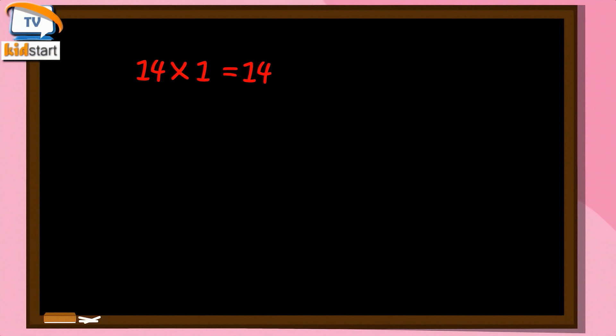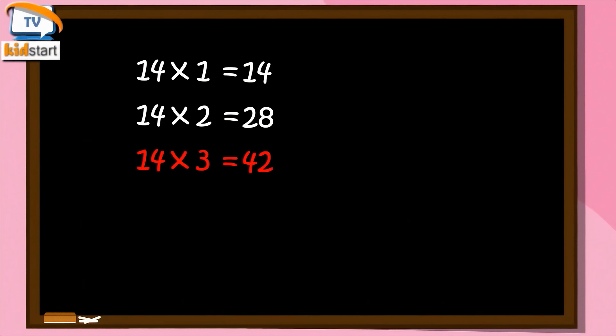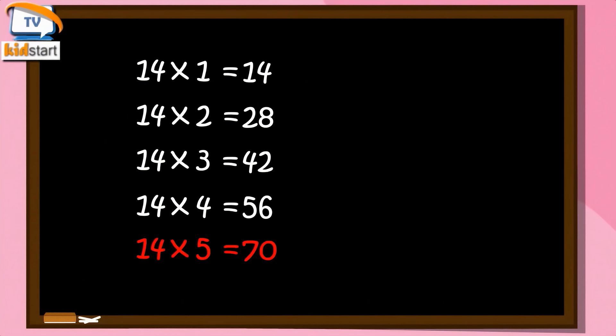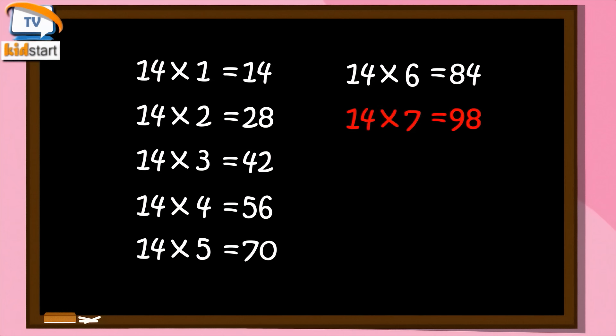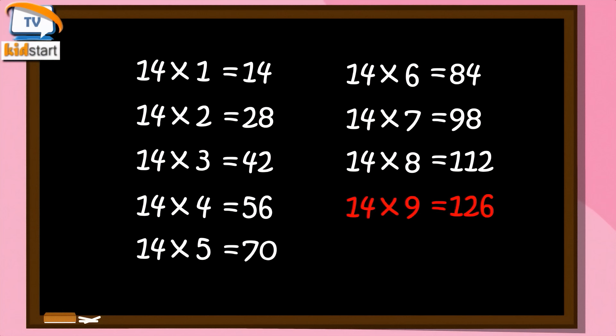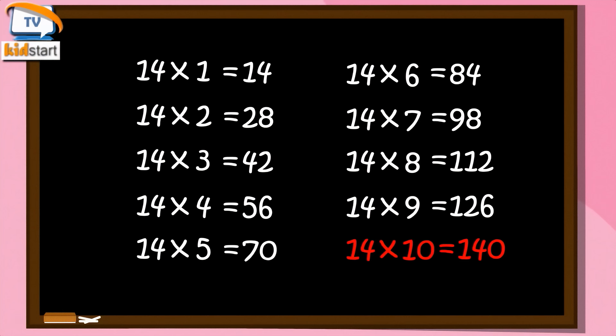Fourteen ones are fourteen. Fourteen twos are twenty-eight. Fourteen threes are forty-two. Fourteen fours are fifty-six. Fourteen fives are seventy. Fourteen sixes are eighty-four. Fourteen sevens are ninety-eight. Fourteen eights are one hundred twelve. Fourteen nines are one hundred twenty-six. Fourteen tens are one hundred forty.